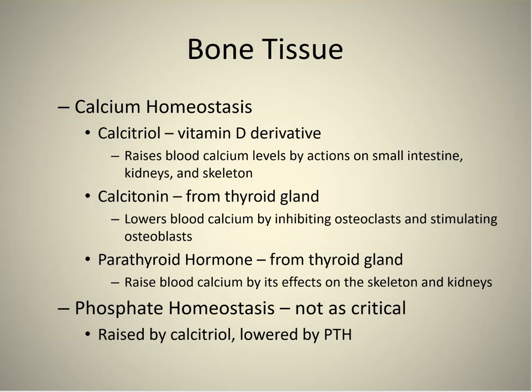Parathyroid hormone does not affect the intestines. Phosphate homeostasis is not as critical. It is raised by calcitriol, where calcium and phosphate move in opposite directions — the more calcium you absorb, the more phosphorus you lose, and the more phosphorus you absorb, the more calcium you lose.